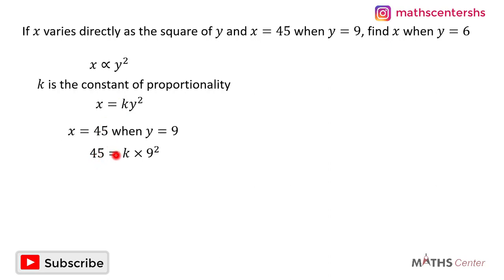When we do that, we are going to have 45 is equal to k times 9 squared. 9 squared will give us 81, so you have 45 is equal to 81k, or 81k is equal to 45. To get k, I'll divide both sides by 81.